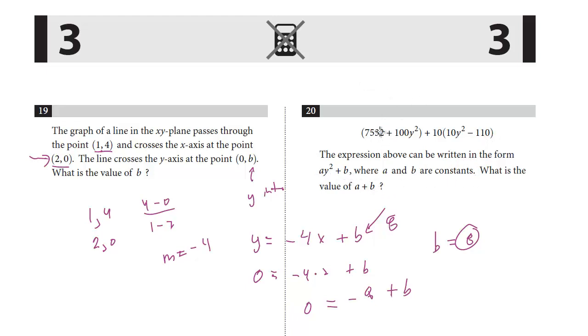I'm going to rewrite this. We have 7532 plus 100y² plus, distributing the 10, we get 100y² minus 1100. 10 times negative 1 is 10, add a zero to get 1100.